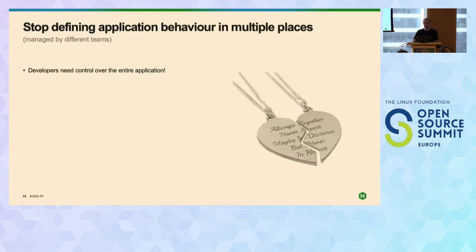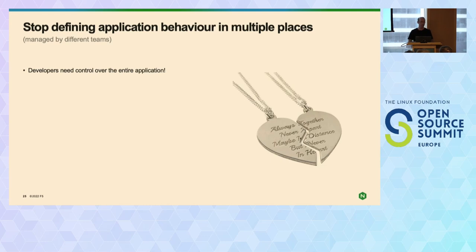What I want to talk about is that we should stop defining application behavior in multiple places. We should define it at the runtime. It doesn't have to be at the code — you don't want to put TLS certificates in your code, you don't want to put authentication in your code. The microservices movement has been really good at saying don't repeat yourself in code and separate your concerns. But that's been pushing stuff into the proxy, and then the proxy has half the application behavior and the code has the other half. For a developer to reproduce the production behavior on their dev environment becomes harder and harder.